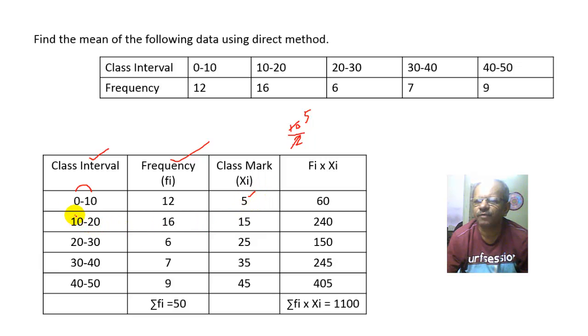Then the class mark of 10 to 20 will be 20 plus 10 that is 30 divided by 2, so it will be 15. Now friends, here you come to know that the difference between these two is 10. So instead of actual solving, just go on adding 10 to subsequent numbers. So 5 plus 10 is 15, 15 plus 10 is 25, 25 plus 10 is 35 and 35 plus 10 is 45. So the class marks will be 5, 15, 25, 35 and 45.